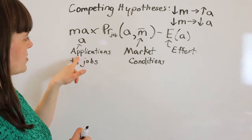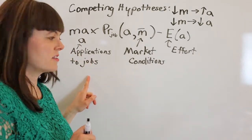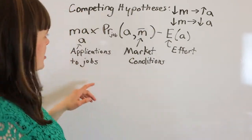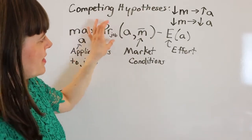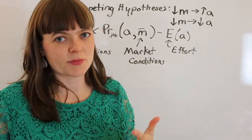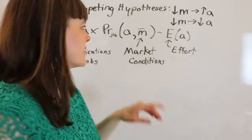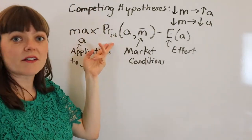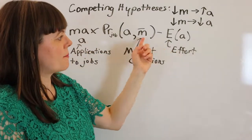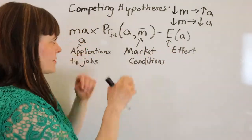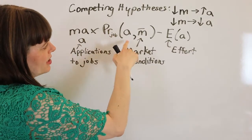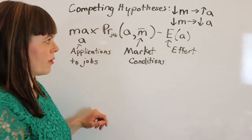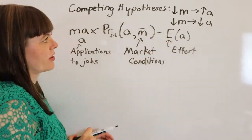Here's the basic model. We're choosing the number of applications to fill out for jobs, and we're thinking about a senior in college optimizing this equation. You're trying to optimize your objective function, which is the probability of getting a job minus the effort put forth in getting jobs. The probability of getting a job depends on how many applications you submit and also on market conditions, which is an exogenous variable. And then effort is a function of how many applications you fill out.